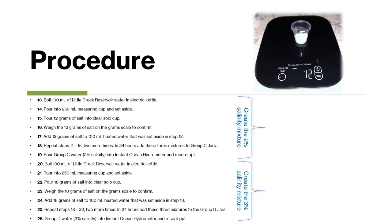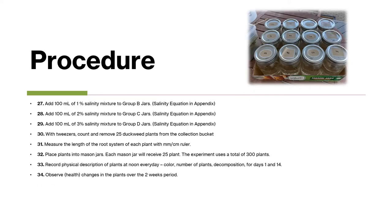Next I created the 3% salinity mixture by boiling 100 milliliters of reservoir water and adding 18 grams of salt, confirmed on the gram scale. I repeated this two more times, and in 24 hours added those three mixtures to the jars in Group D. I recorded the parts per thousand for Group D water with 3% salinity. Then I added 100 milliliters of 1% salinity mixture to Group B jars, 100 milliliters of 2% salinity mixture to Group C jars, and 100 milliliters of 3% salinity mixture to Group D jars.